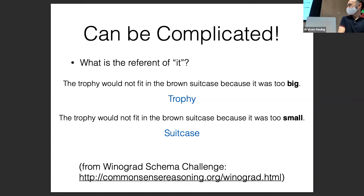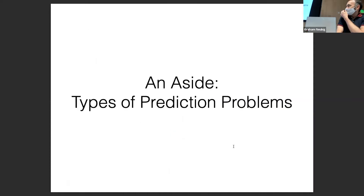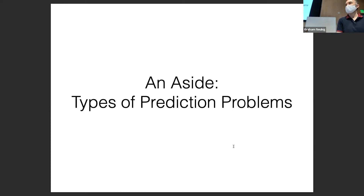This is from the Winograd Schema Challenge — a common sense reasoning challenge. There's also a much larger version called Winogrande. Before going directly into how we handle long-distance dependencies, I'd like to talk about types of prediction problems in NLP. We need to know what type of prediction problem we are solving in order to create an appropriate model or decomposition.